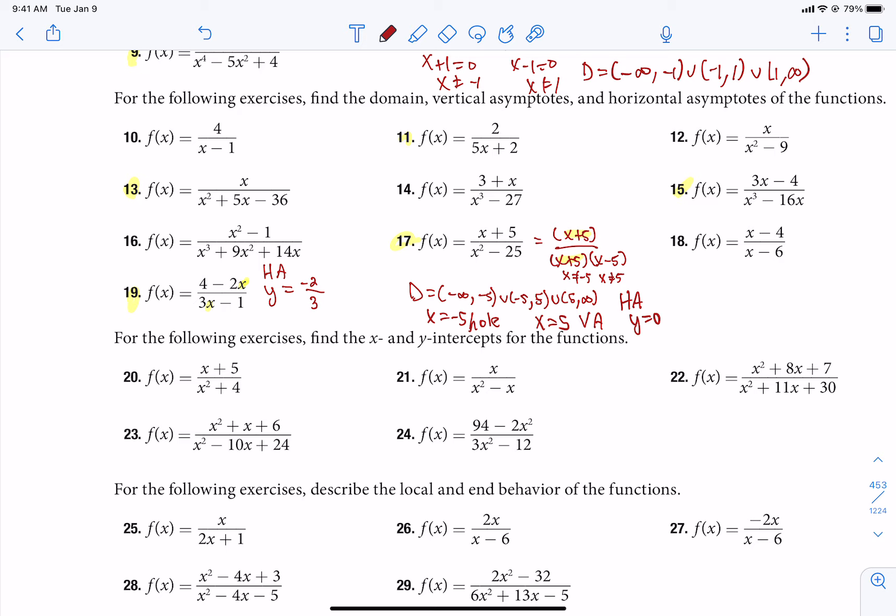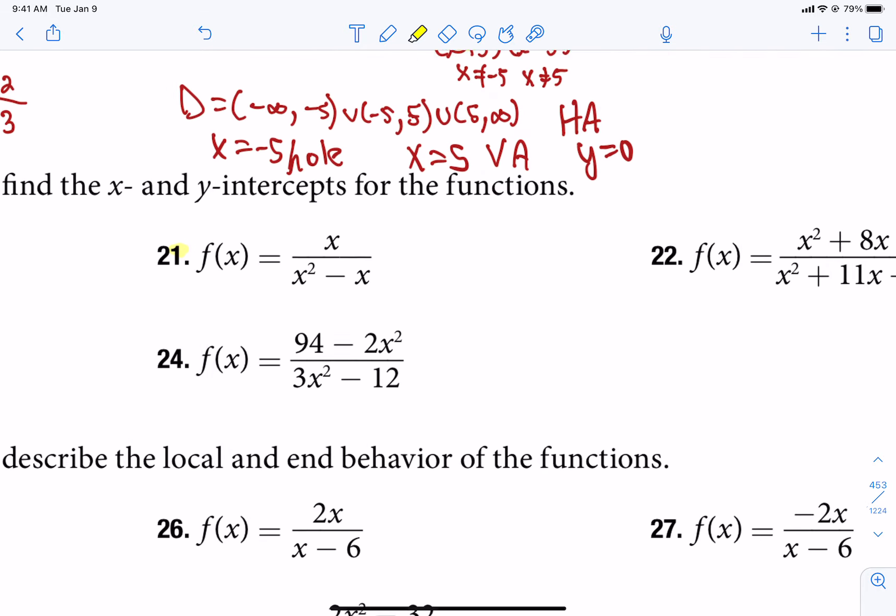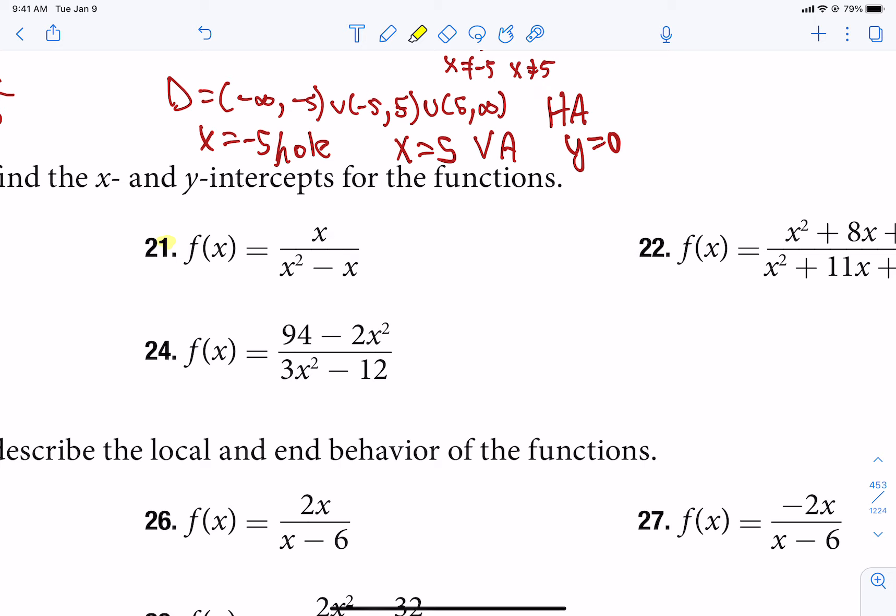Let's talk about x and y-intercepts, 21 and 23. Let's do 21 together. Get it in factor form. If any of the factors on top match the factors on the bottom, remember that is a hole. Cross it out before you answer the question of where are the x and y-intercepts.